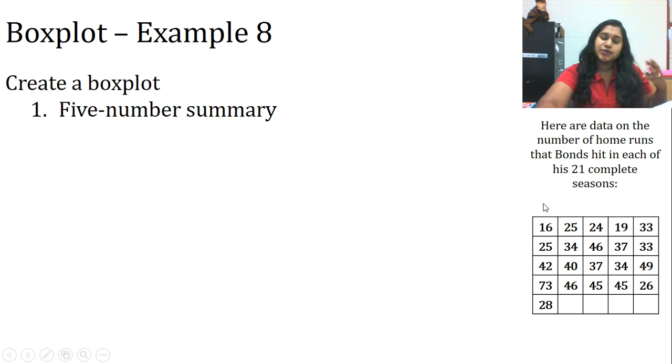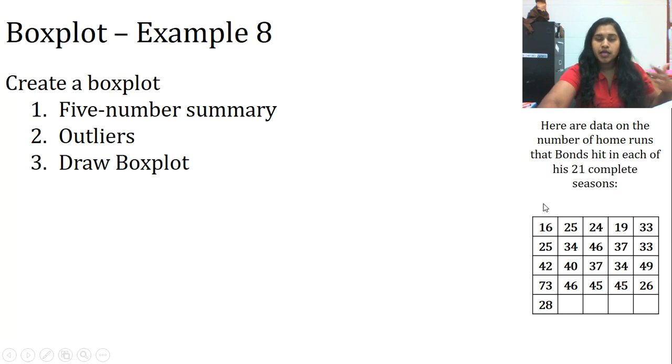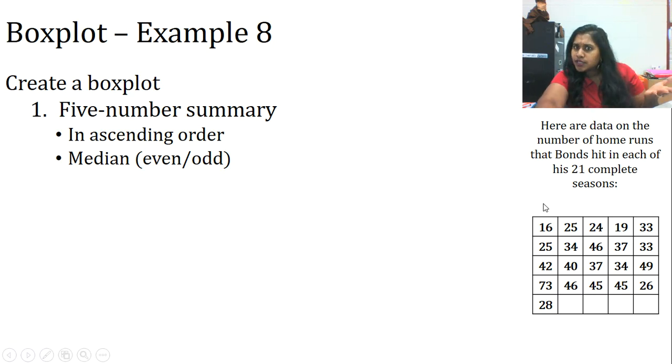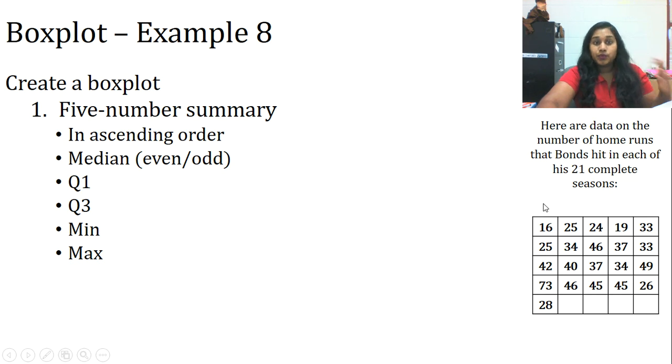But we're going to go ahead and make it into a box plot. Some basic steps: we're going to want that five-number summary. What are our outliers? And let's draw it. That five-number summary, remember, I want it in ascending order first. I want the median, and the median is going to change depending on whether the total number of home run hits is even or odd. The quartile one, the quartile three, the minimum and maximum value for now. I mean, we'll adjust if we know outliers. And then we can get our five-number summary.